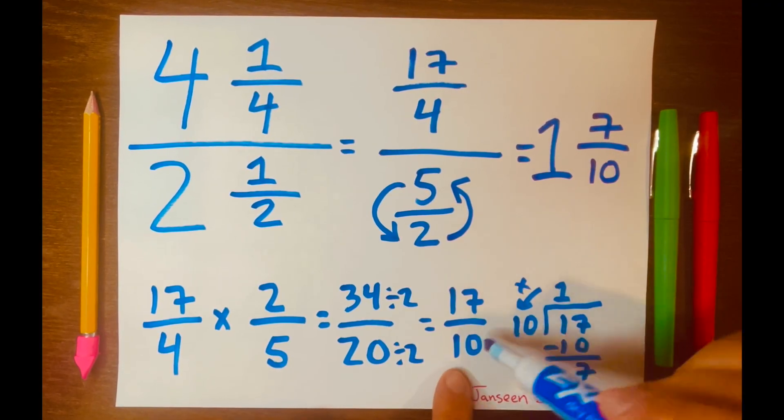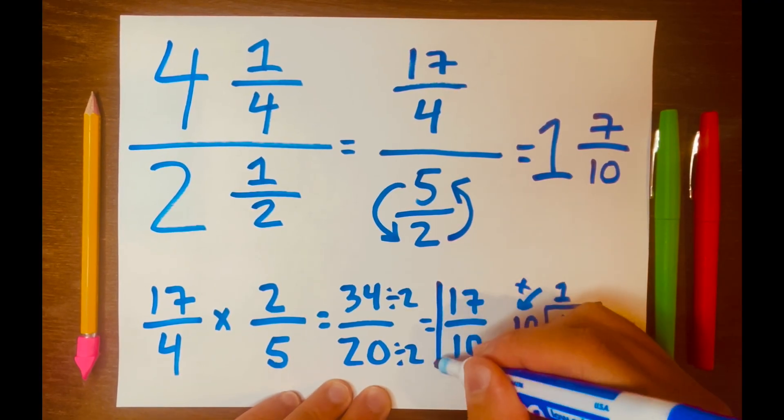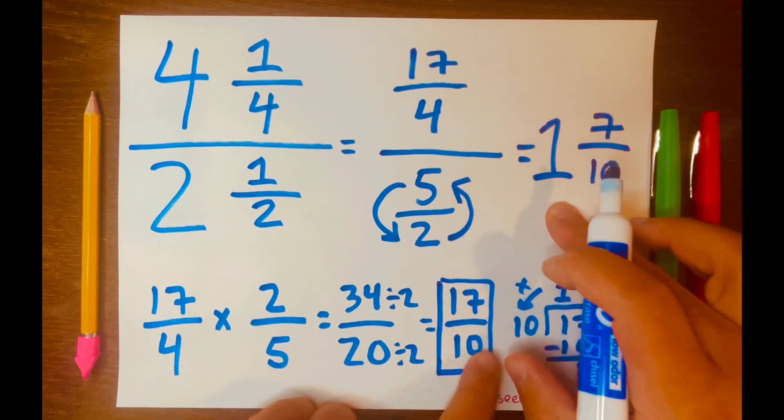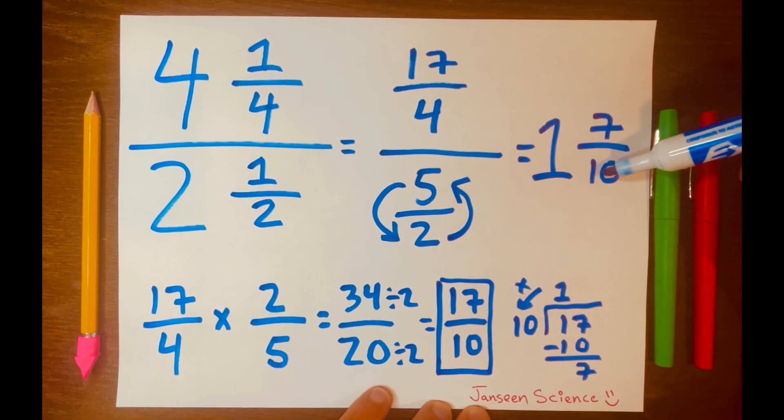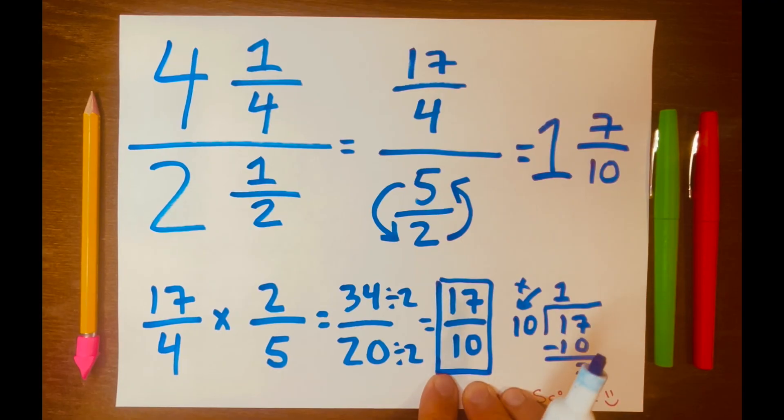So now if you want to go back to 17 over 10 as your answer, because this is the answer, all we did was turn it into a mixed number. However, we just have to multiply 10 times 1, which is 10, plus 7, gives us 17 over 10.